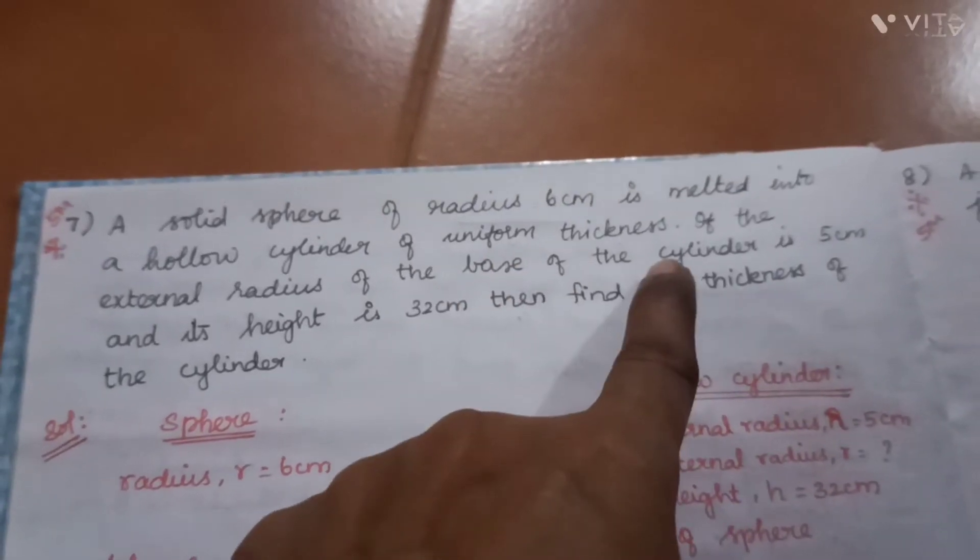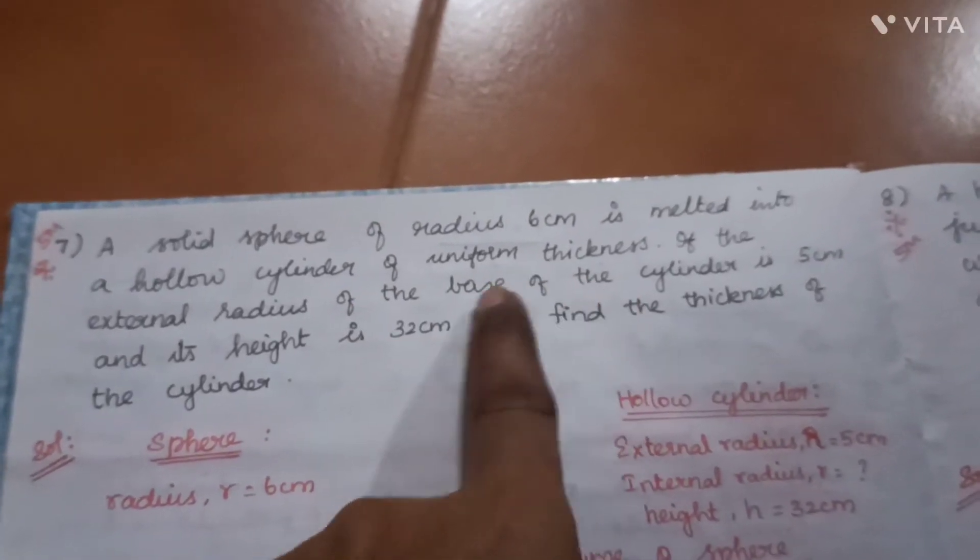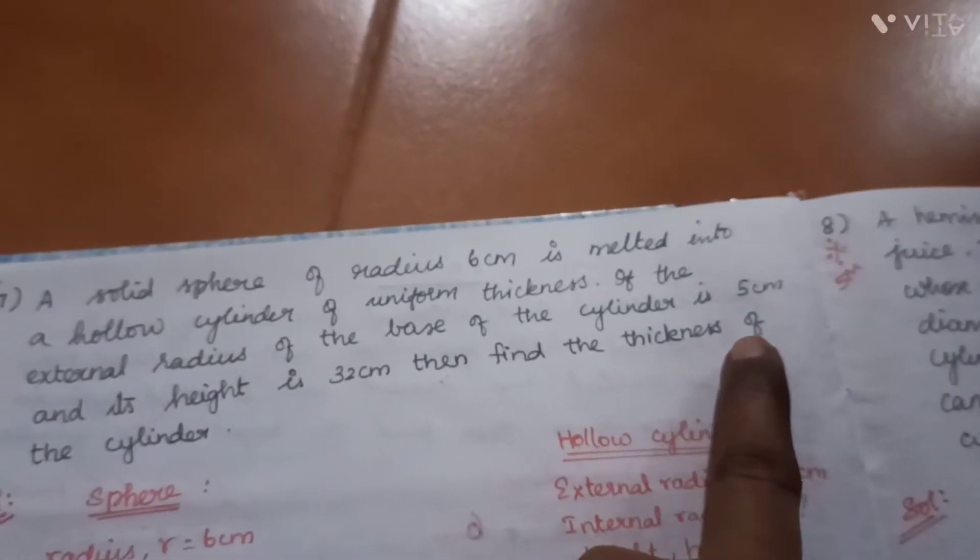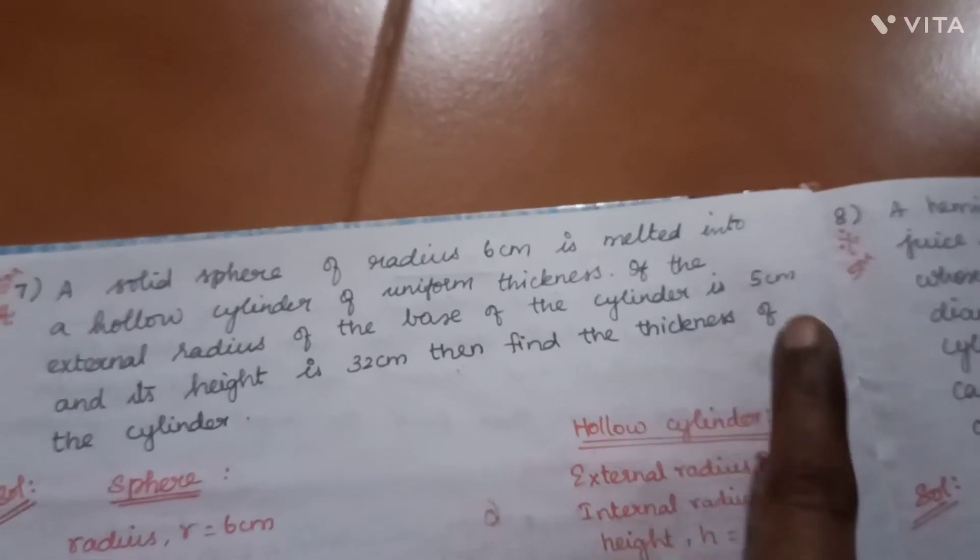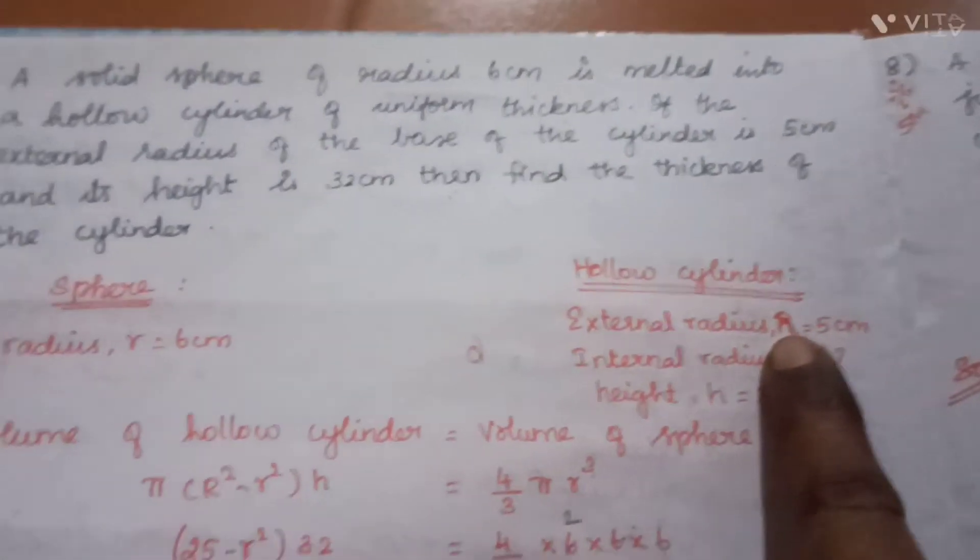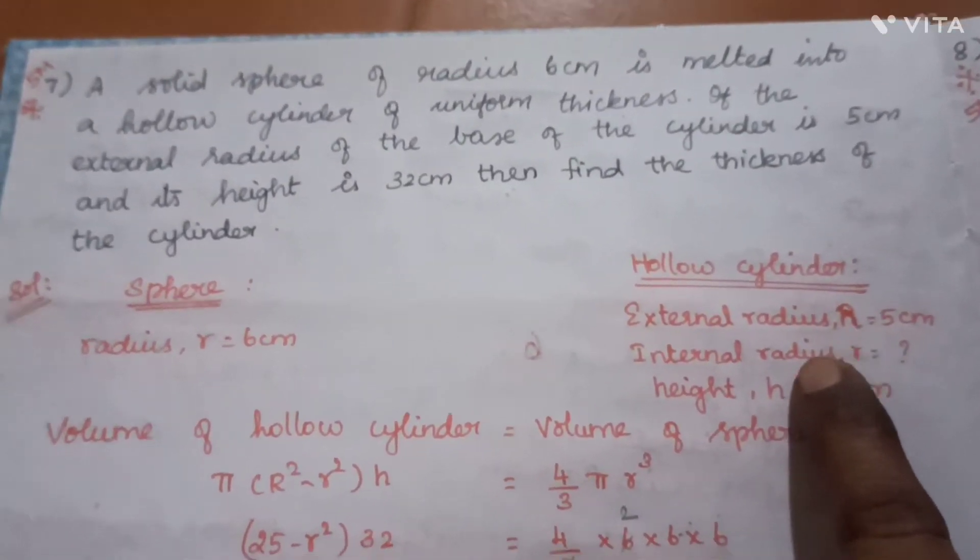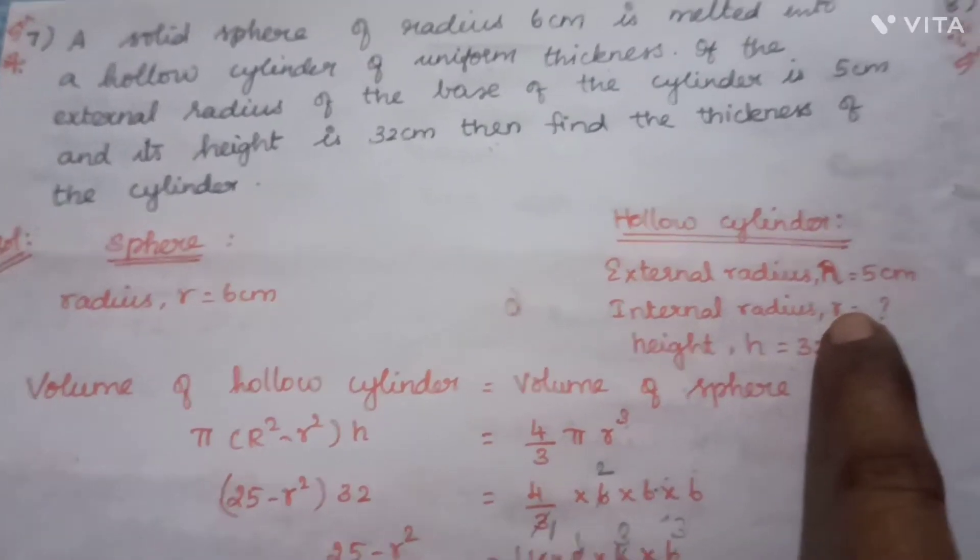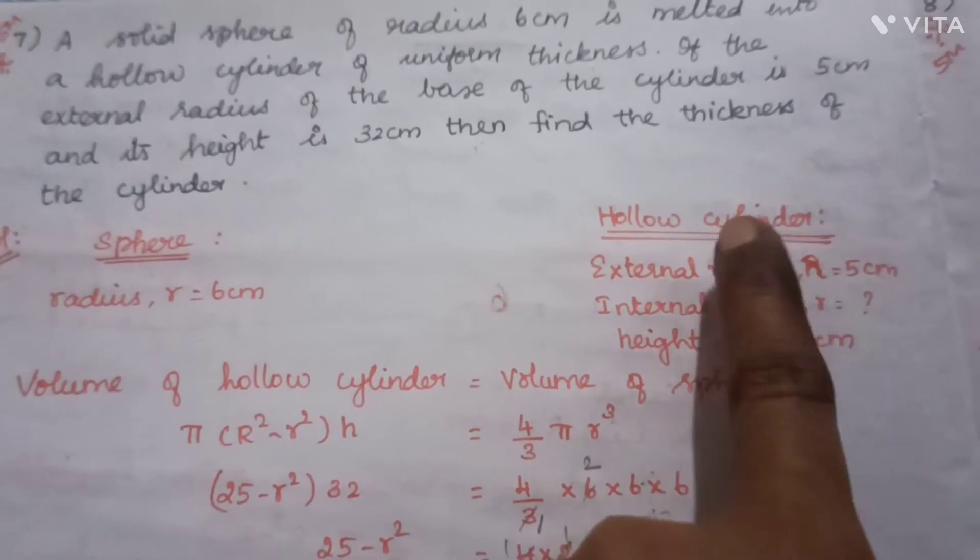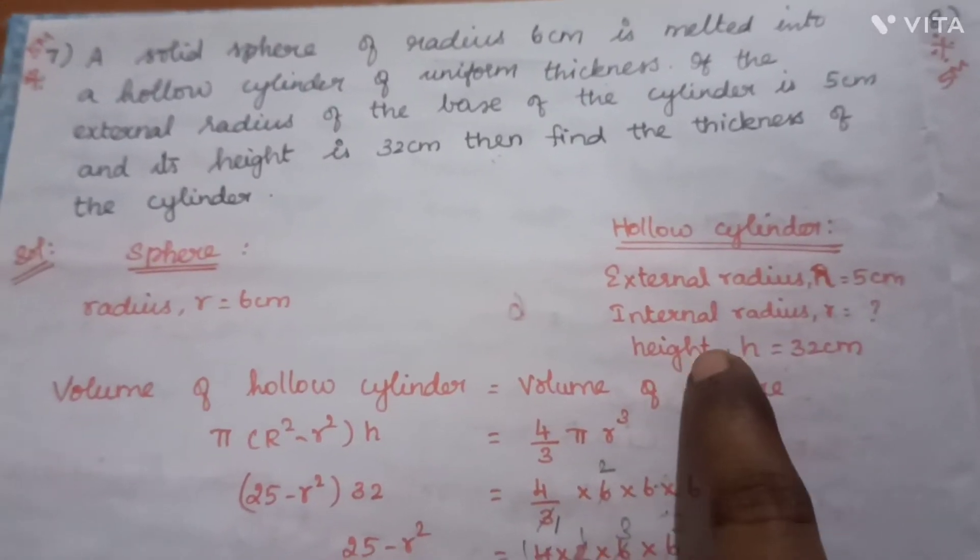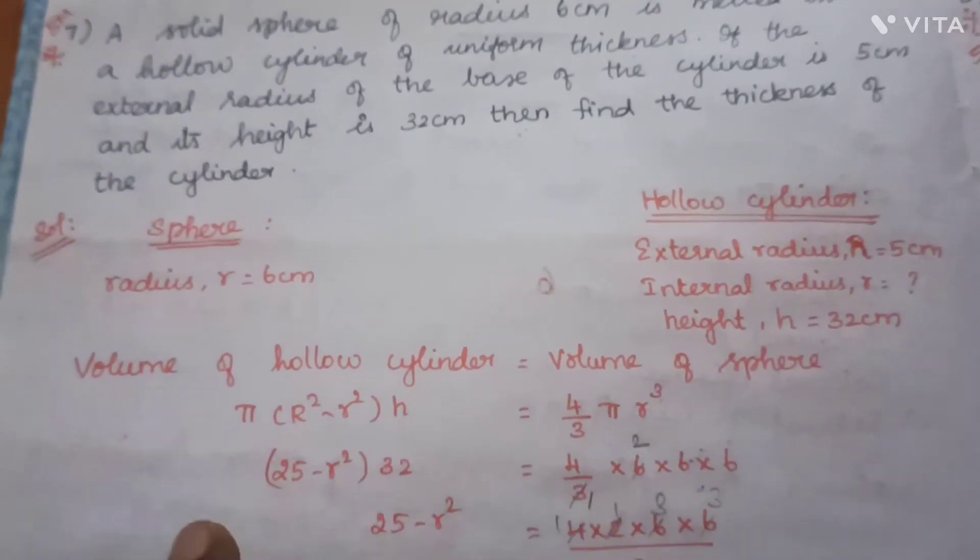For the hollow cylinder, the external radius capital R is equal to 5 cm, and internal radius small r we have to find. The height is 32 cm. We need to find the thickness of the cylinder.